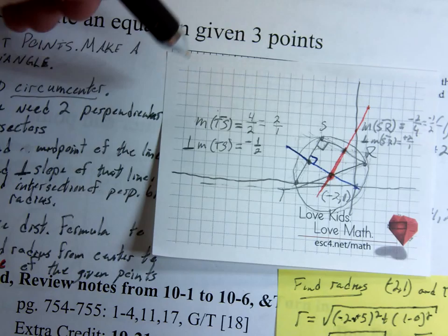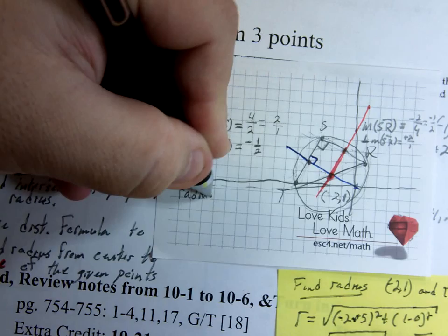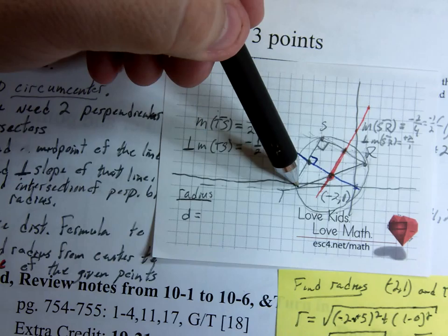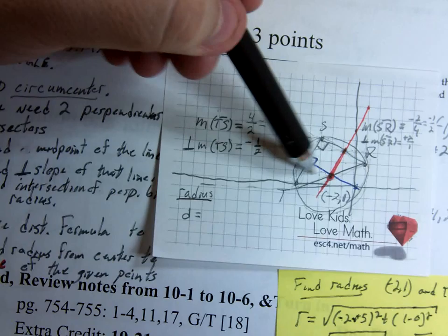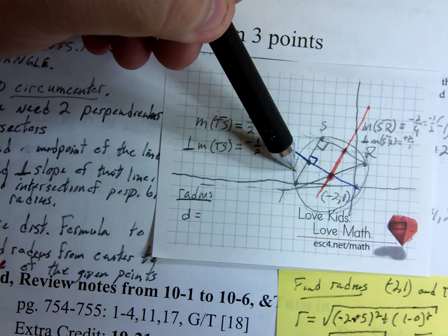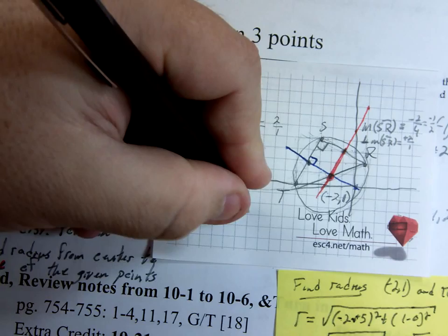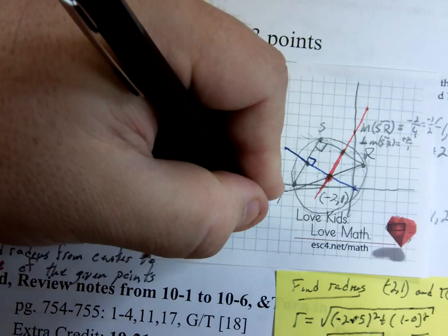So we've got our center. What do we still need to make an equation of a circle? We need the radius. Thank you. Now radius will be the distance formula, I guess. We're going from the center out to any one of these three points, correct. All right, Ataria, help me out here. How far is it from here to here? How many squares is that? And how many down? So my distance, I'm going to put r here instead of d for radius. My radius is going to be the square root of three squared plus one squared, and that is the square root of 10.